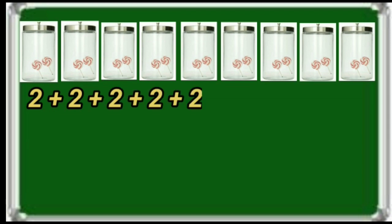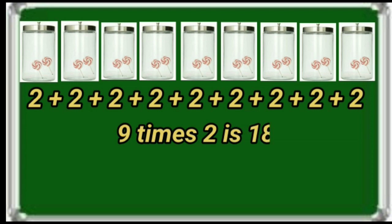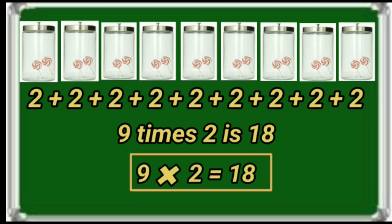See here. Each jar has 2 lollies. Say children, how many times is 2 repeating? Yes, right — 9 times 2 is repeating. Total 18 lollies. 9 times 2 is 18. That can be written as 9 2's = 18.